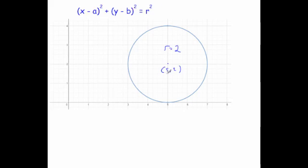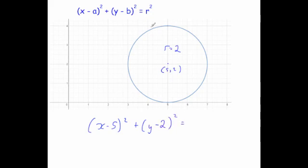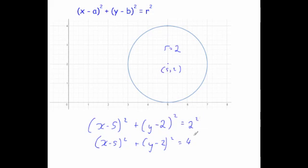So x minus the x-coordinate of the center — that's going to be x minus 5, all squared — plus y minus b, where b, the y-coordinate of the center, is equal to 2. So y minus 2, all squared, equals the radius squared, which is 2 squared. That can be written as x minus 5 squared plus y minus 2 squared equals 4, because 2 squared is equal to 4.